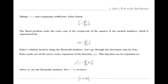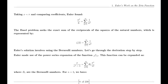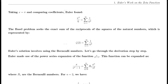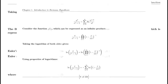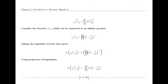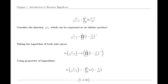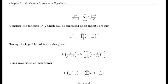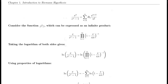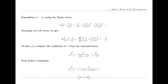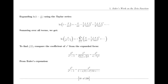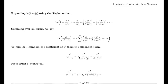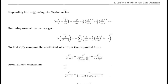The functional equation of the zeta function relates its values at s and 1 minus s through a complex expression involving π, the gamma function, and trigonometric functions. This equation is a key result in the theory of the zeta function, showcasing its symmetry and the deep relationships between different mathematical concepts.